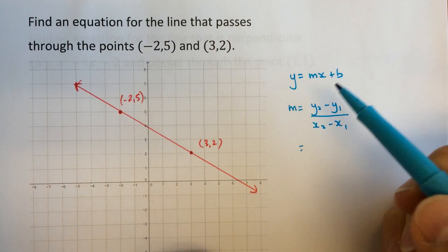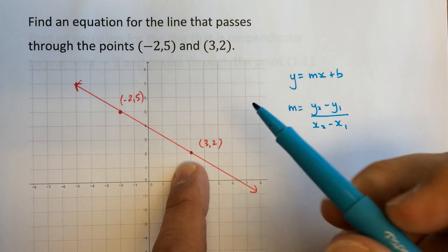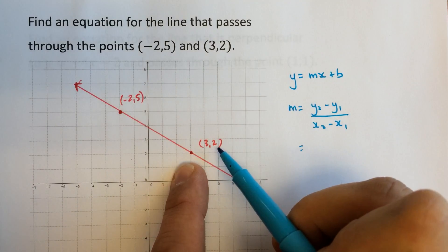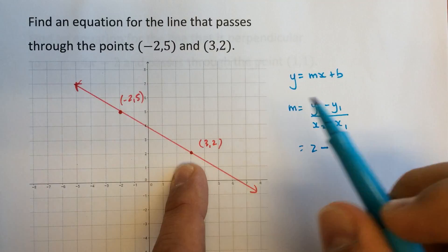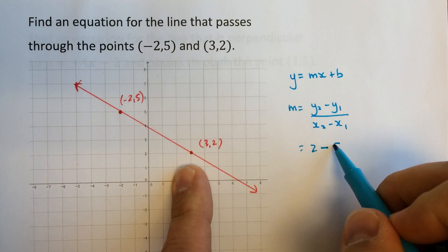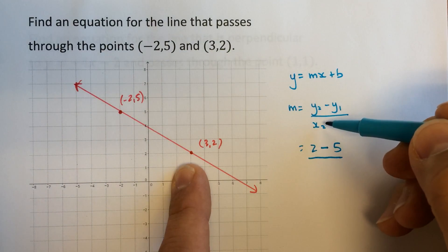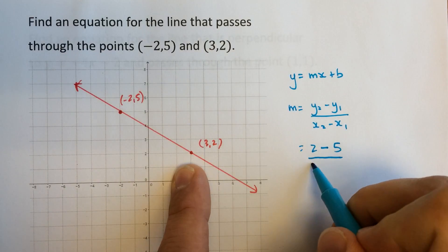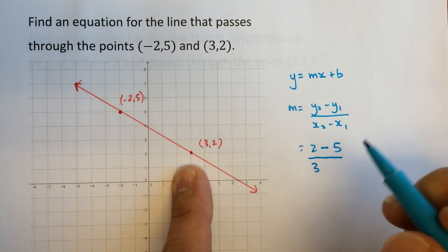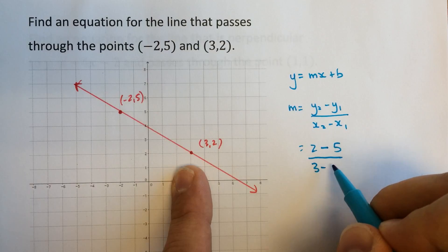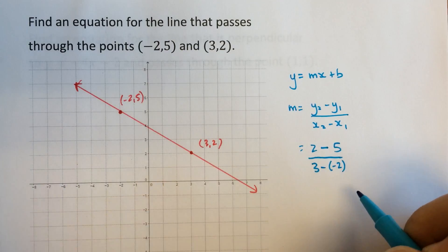So picking a point to be our number 2 point, I'll start with this one, let's say. y2 is 2 and subtract y1, which is 5. And x2 will be this one here, 3, minus x1 is negative 2. So being careful here, minus negative 2. I'm going to put that in brackets.